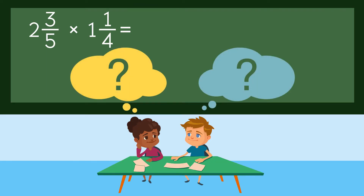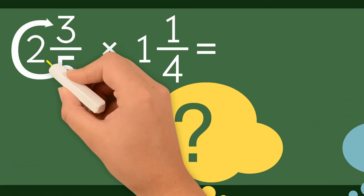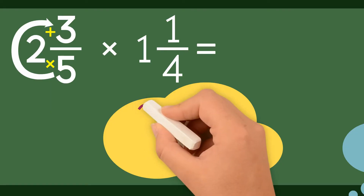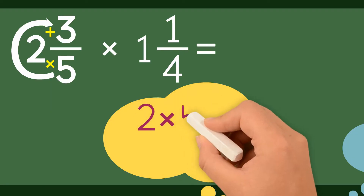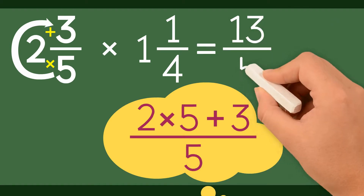First, we change the first mixed number into an improper fraction. We do this by using the C method. We multiply the denominator by the whole number and then add that to the numerator. The denominator stays the same. So the numerator is 2 times 5 plus 3, and the denominator is 5. So the improper fraction is 13 over 5.